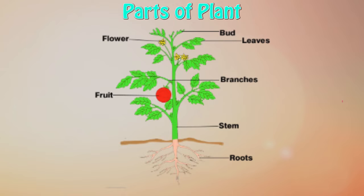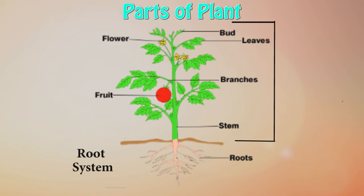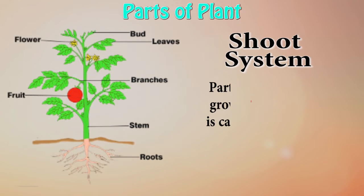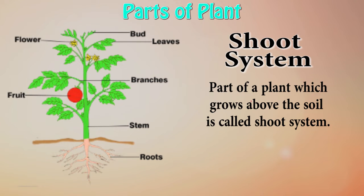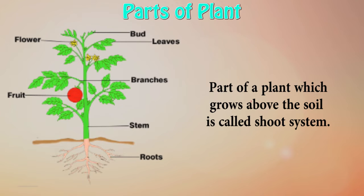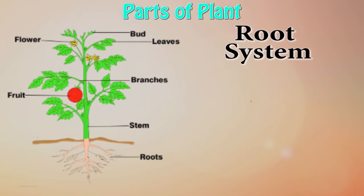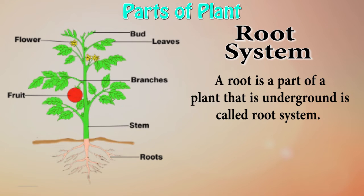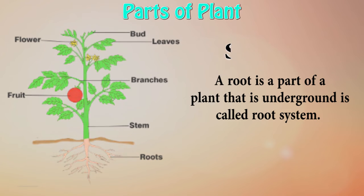Do you know about root system and shoot system? The part of a plant which grows above the soil is called the shoot system. A root is a part of a plant that is underground — it is called the root system.